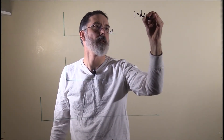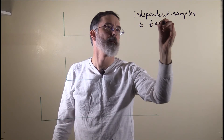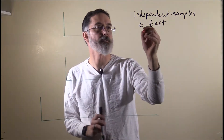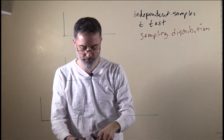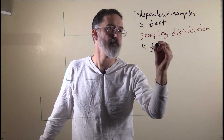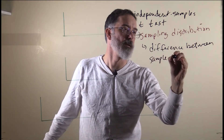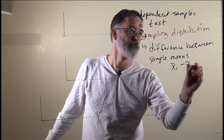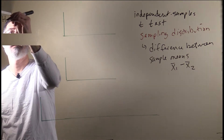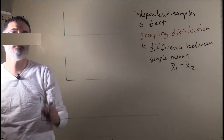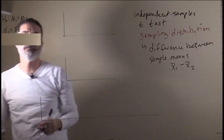I will explain how the sampling distribution was created for the independent samples t-test. This sampling distribution is the difference between sample means — it is a frequency distribution for the differences between the means. For the independent samples t-test, the null hypothesis is that the two population means are the same, and it assumes that the standard deviation for the distributions of each group are the same.